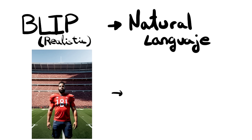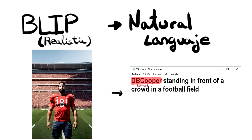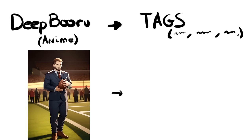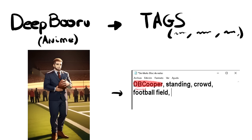The style of captioning you will use will vary depending on what model you're training your images on. If you're captioning for photography, you will need to use the BLIP style captioning, which is basically a more fluid way to describe things, like natural language. For example, a keyword standing in front of a crowd in a football field. For anime or cartoon styles, we will use the DeepBooru style of captioning. It uses tags — words separated by commas. The same example with DeepBooru tags would be: keyword, standing, crowd, football field.